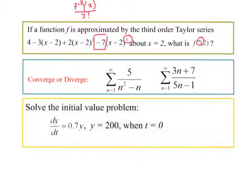So this is the coefficient. This must be equal to negative 7. So I multiply both sides by 3 factorial to solve for just what is the third derivative. Negative 7 times 6 is negative 42.